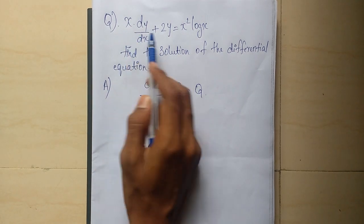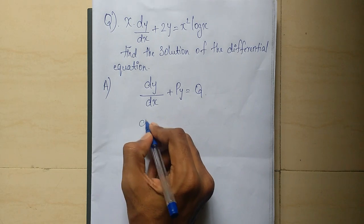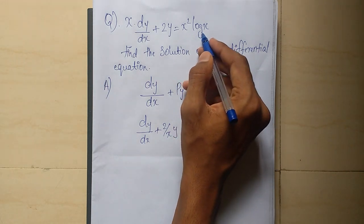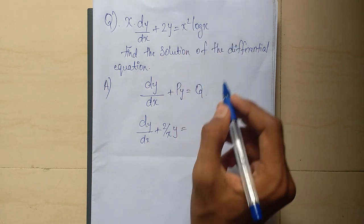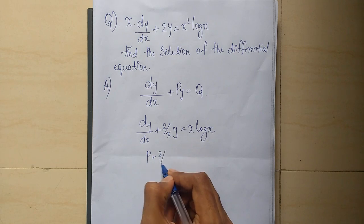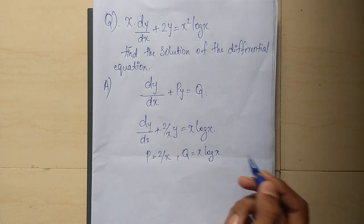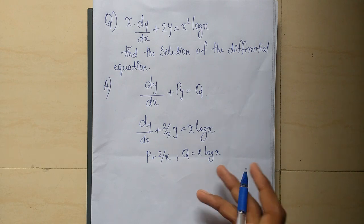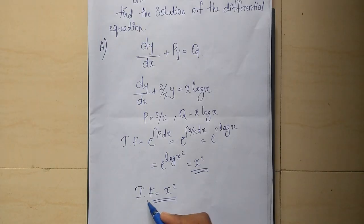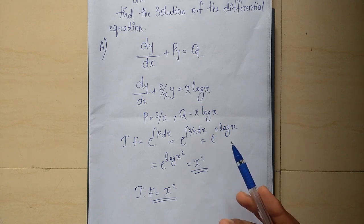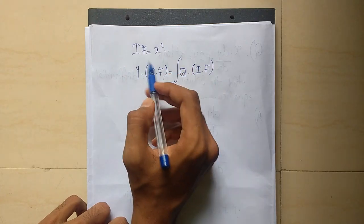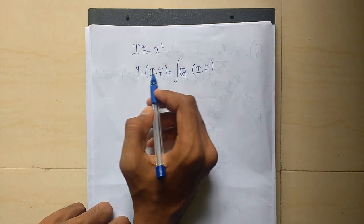We divide by x to get dy by dx plus 2 by x times y equals x log x. The integrating factor is again x squared, same as the previous problem.